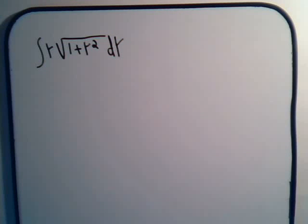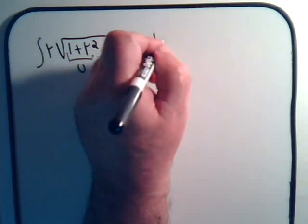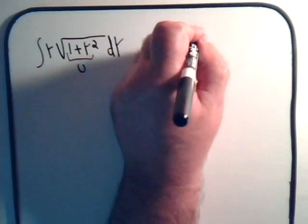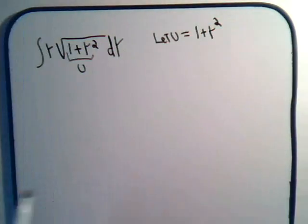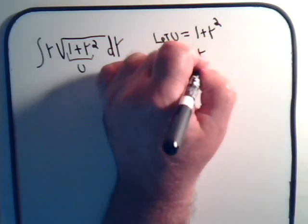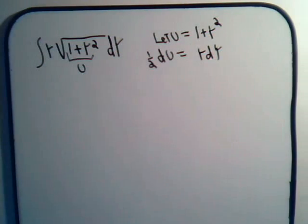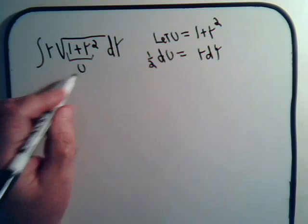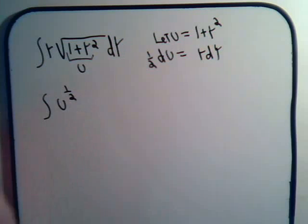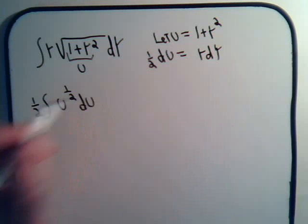Here we have the integral of y times the square root of 1 plus y squared dy. Hopefully you can see right off the bat, if I call this part u, let u equal 1 plus y squared and du equal 2y dy. So the problem is over. We have the integral of u to the one half and y dy, that's just one half du.